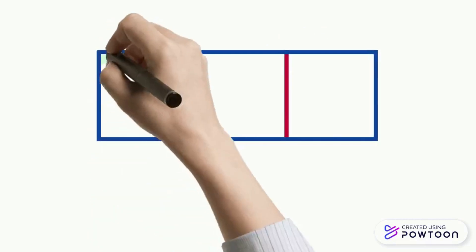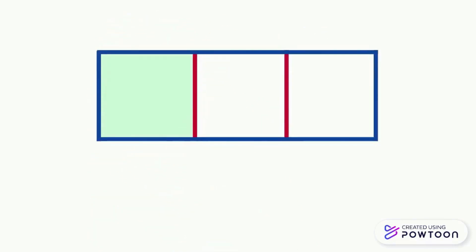We divided this rectangle into three equal parts, and we colored one part. The fraction of the colored part is 1 over 3, and we read it one third.